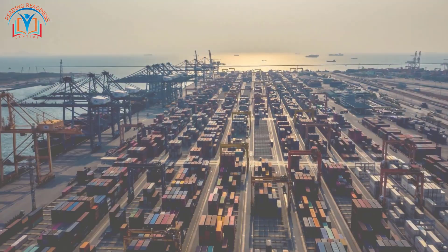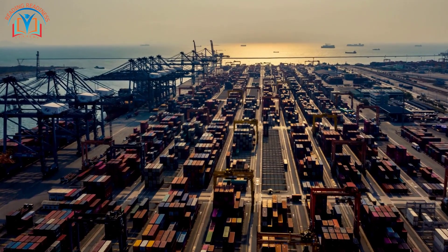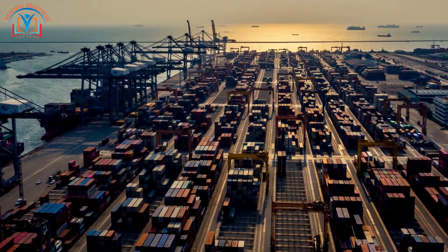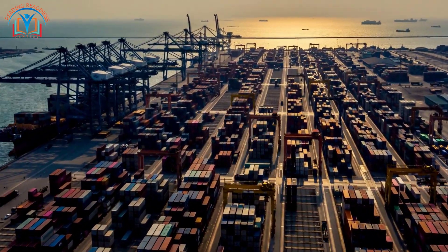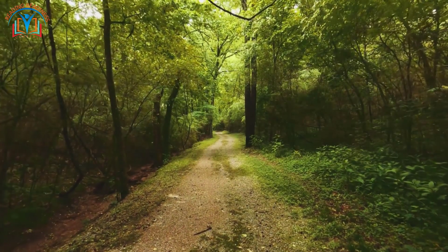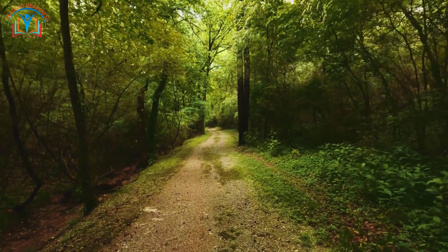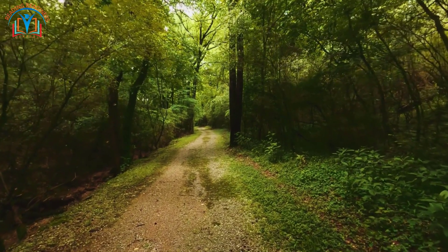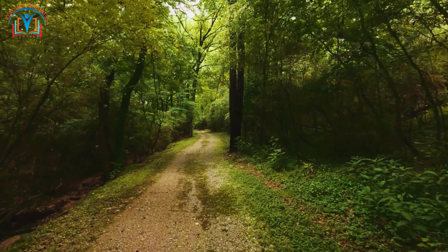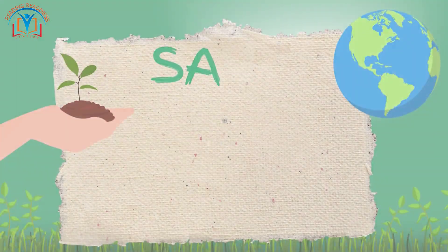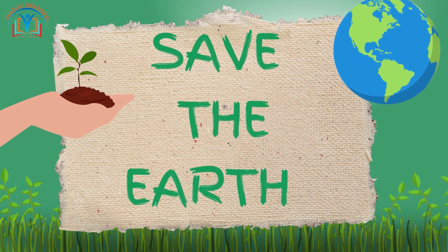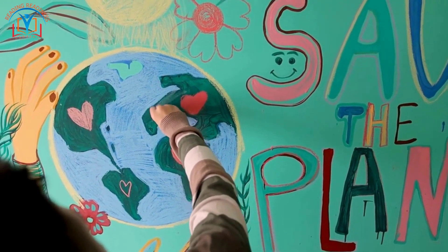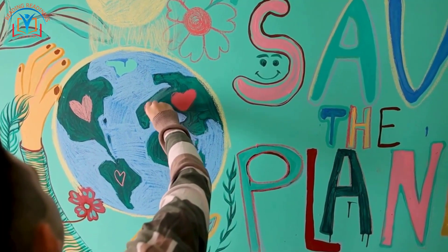In many parts of Europe, the land is used for urban and industrial purposes. This is because the population is dense and there is a lot of economic activity. In many parts of South America, the land is used for forestry and conservation. This is because the continent has a lot of rainforests, which are important for the environment. Land use is an important topic because it affects the way we live and work. It is also important to use the land wisely so that we can protect the environment for future generations.